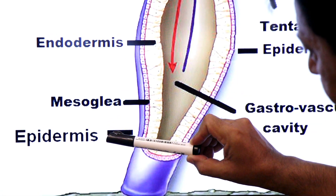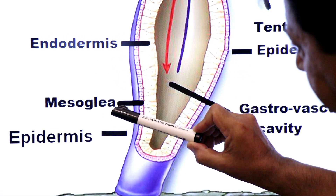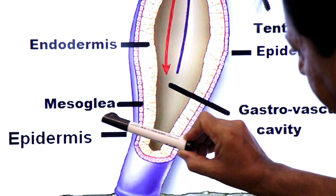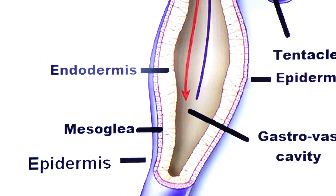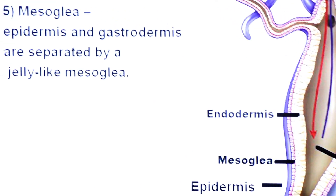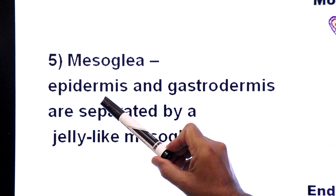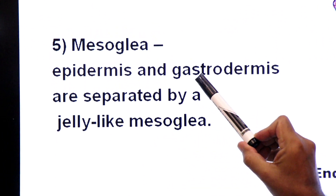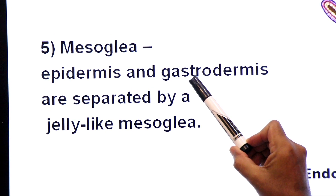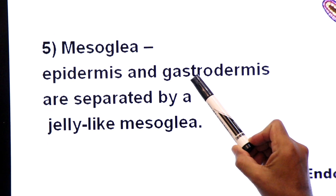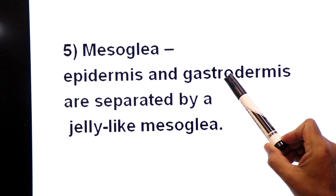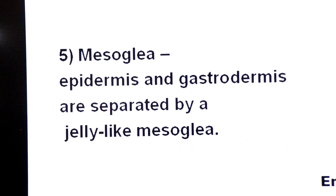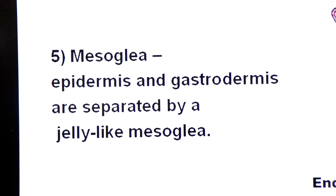Between epidermis and endodermis there is a jelly-like layer known as mesoglea. The endodermis is also called gastrodermis. So, epidermis and gastrodermis are separated by this jelly-like layer called mesoglea.